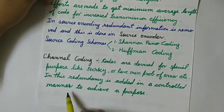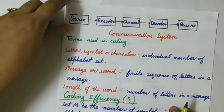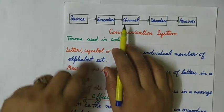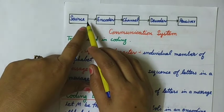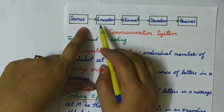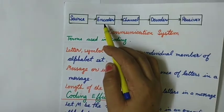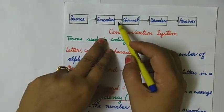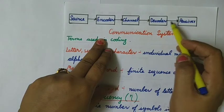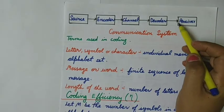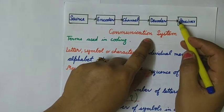This is the diagram in which source encoding is used in a communication system. Here we have a source that generates messages. These messages are then converted or mapped into a code in the source encoder. The coded message is then sent over the channel, decoded to get back the message, and sent to the receiver, where the original message is recovered.